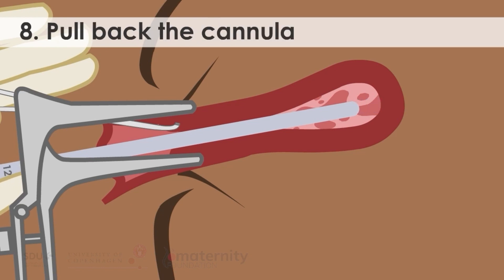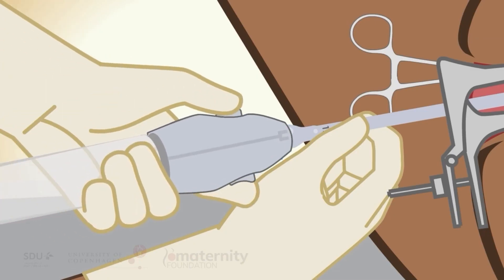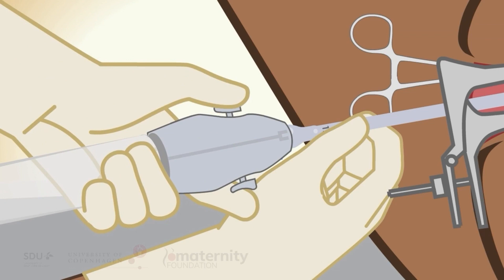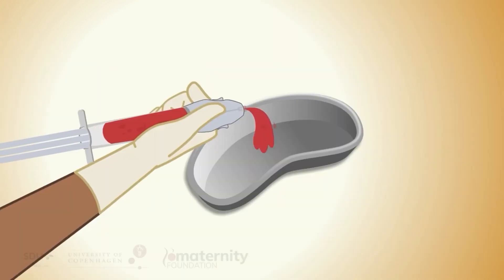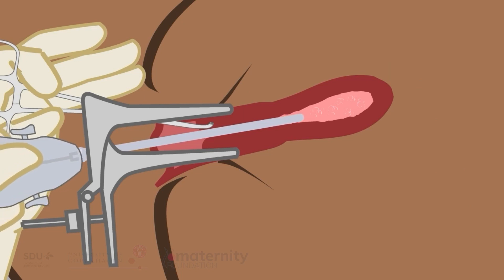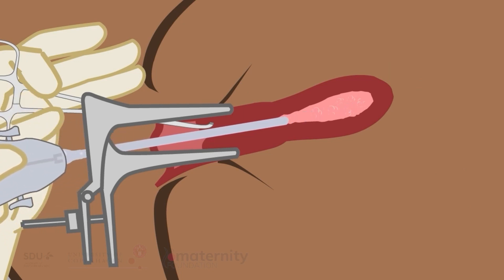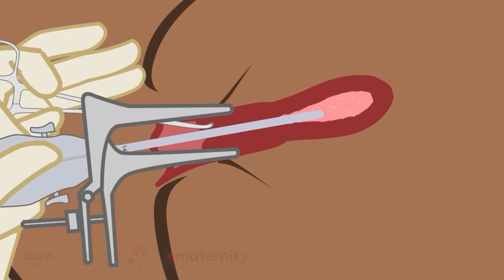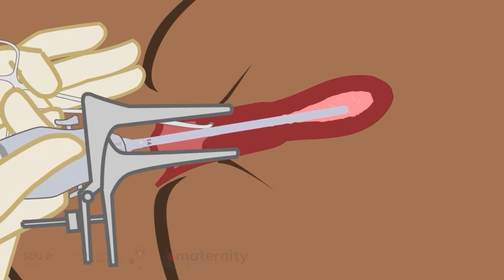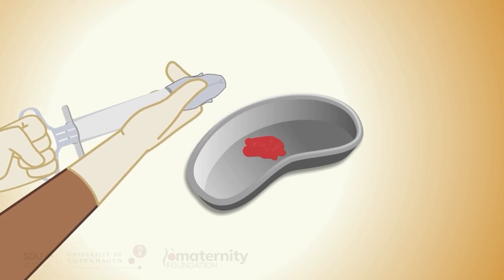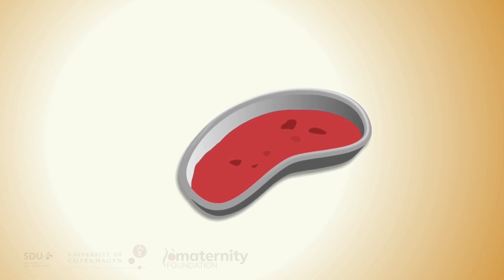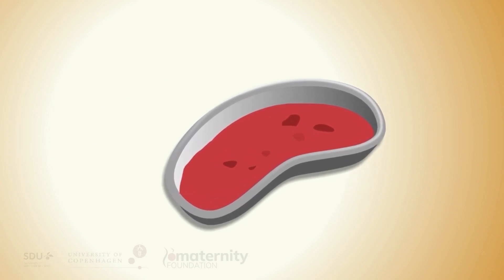8. Pull back the cannula one centimeter. Attach the syringe and apply suction by opening valves. Rotate and move forth and back. You might need to detach the syringe, push out aspirate, and apply vacuum again. Repeat suctioning until you feel a gritty sensation and there is no return of tissue. When the aspiration procedure is complete, assess the amount of bleeding and inspect the tissue to ensure a complete abortion. Empty the uterine aspirate into a container and ensure that products of conception are present in appropriate quantities based on gestational age. The tissue should be considered infectious waste and disposed of properly and in accordance with local regulations.